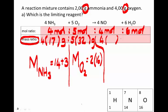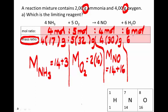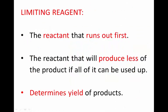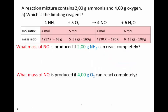4 moles of NO have a mass of 4 times the molar mass of NO. The molar mass of NO is 14 g/mol for N plus 16 g/mol for O, giving 30 g/mol. And 6 moles of water has a mass of 6 times the molar mass of water. The molar mass of water is 2 g/mol for H plus 16 g/mol for O, giving 18 g/mol. We are trying to find the limiting reagent, which is the reactant that produces less of the product, so we write two sub-questions.